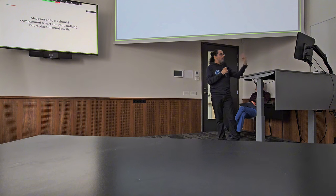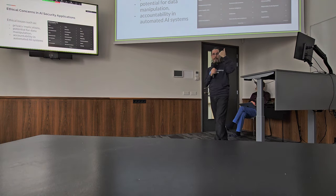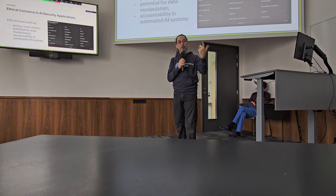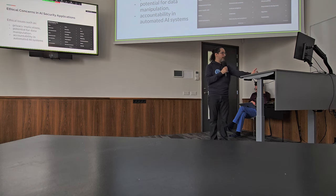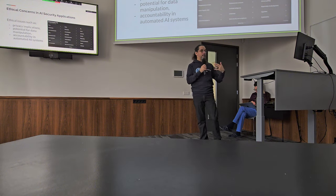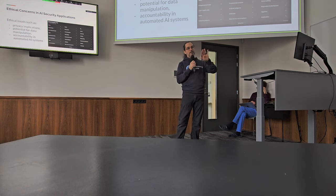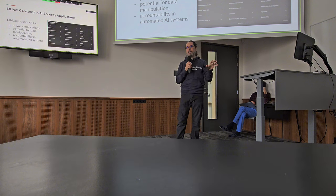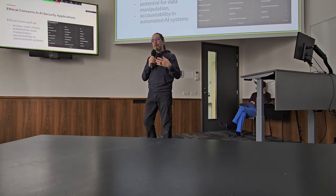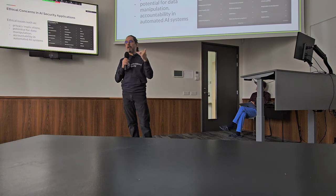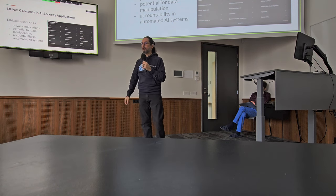AI prior tools should complement smart contract auditing, not replace manual audits. Ethical concerns and privacy implications: you need to train AI with real data about what's happening, so be aware of what kind of data you're feeding the AI. Potential for data manipulation: you can introduce a lot of bias. There's also the Lazarus Group from North Korea — they were placing people inside DeFi companies to manipulate code and information where companies are using AI.